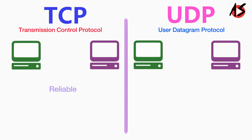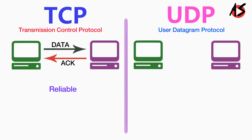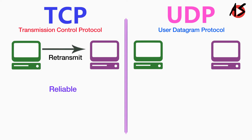TCP is a reliable protocol as it provides a guarantee for the delivery of data. It follows an acknowledgement mechanism in which when the sender gets a positive acknowledgement from the receiver, it means the data has been received successfully. If the sender does not get an ACK, then TCP will retransmit the data. While UDP is an unreliable protocol as it does not have such a mechanism and does not guarantee delivery of data.